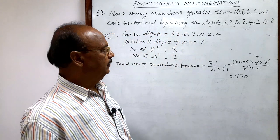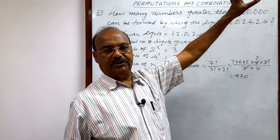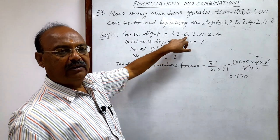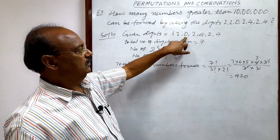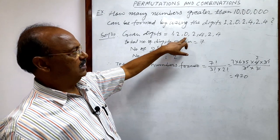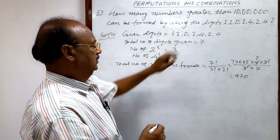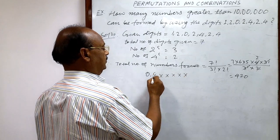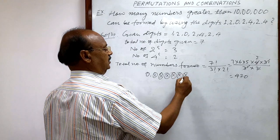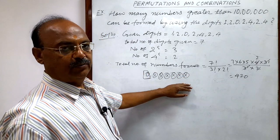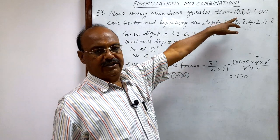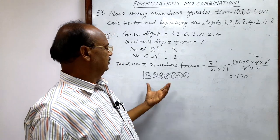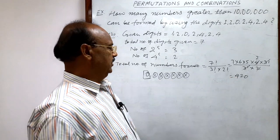However, the condition is that the numbers must be greater than 10 lakhs. If a number starts with zero, it becomes a six-digit number — since there are only six remaining places — and that cannot be greater than the seven-digit number 10 lakhs. So we must subtract those numbers starting with zero from our total.